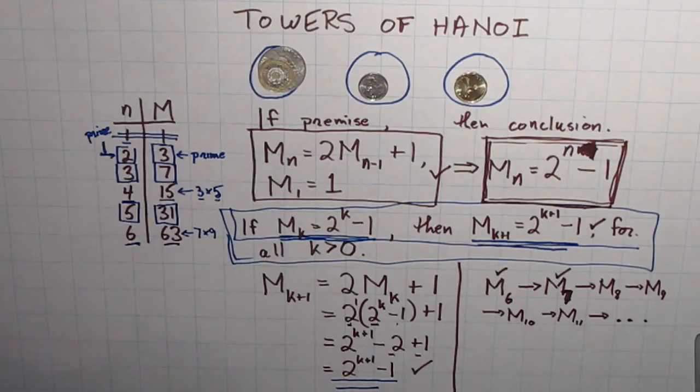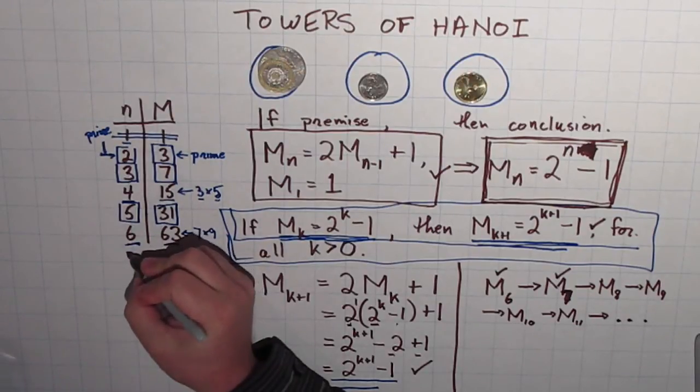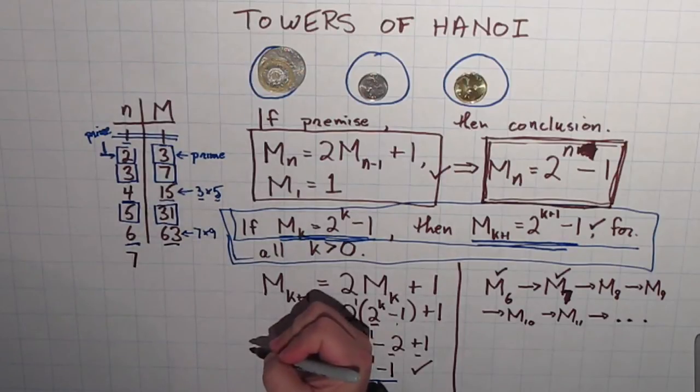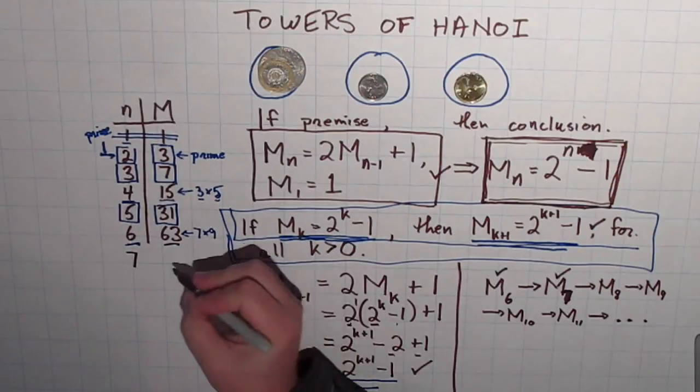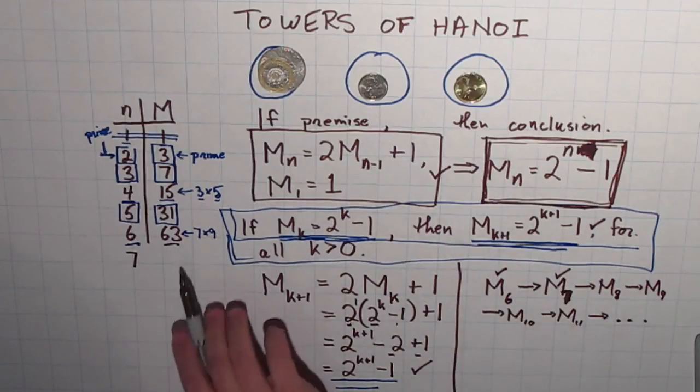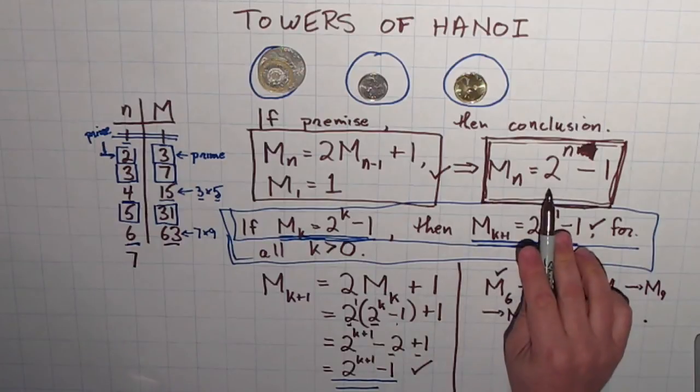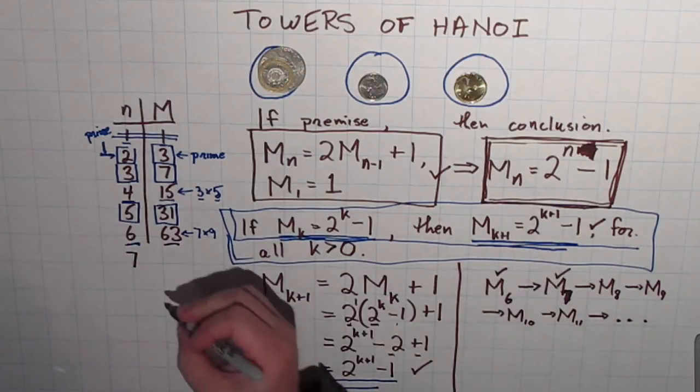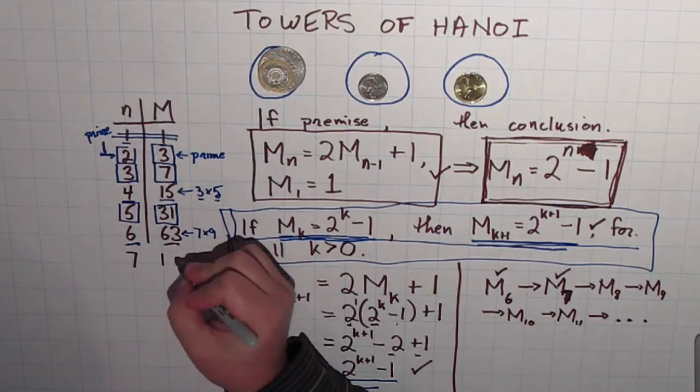Let's go one more because the next number, 7, 7 is a prime number. Does the number we get here also come out to be prime? You can use either of these two formulas now. Both of them work. You can take 63 and double it and add 1. Or you can take 2 to the 7 and subtract 1. Doesn't matter which way you do it. But either way, you're going to get the number 127.